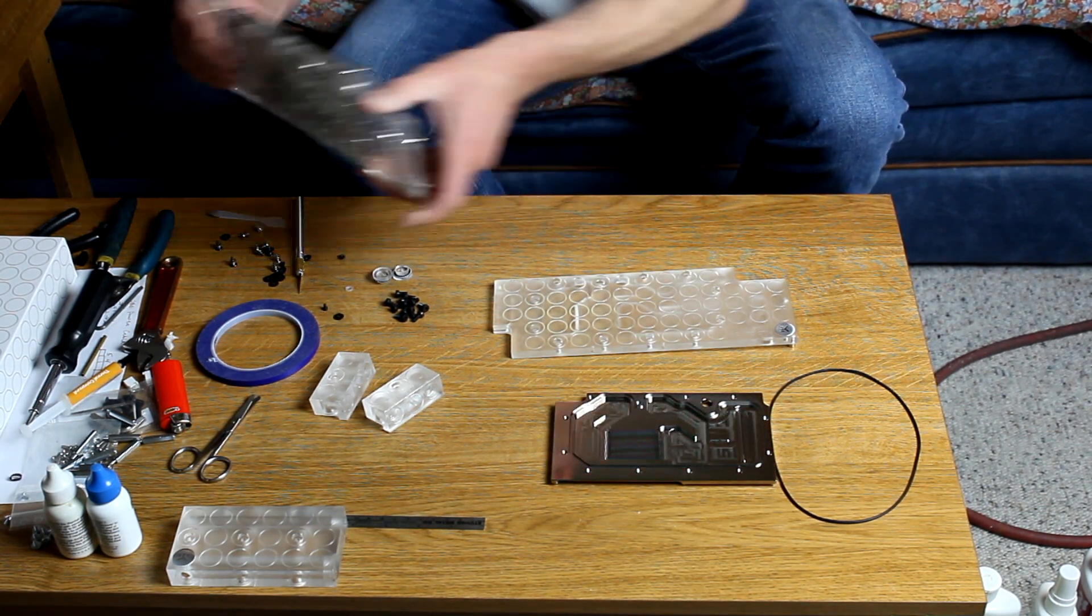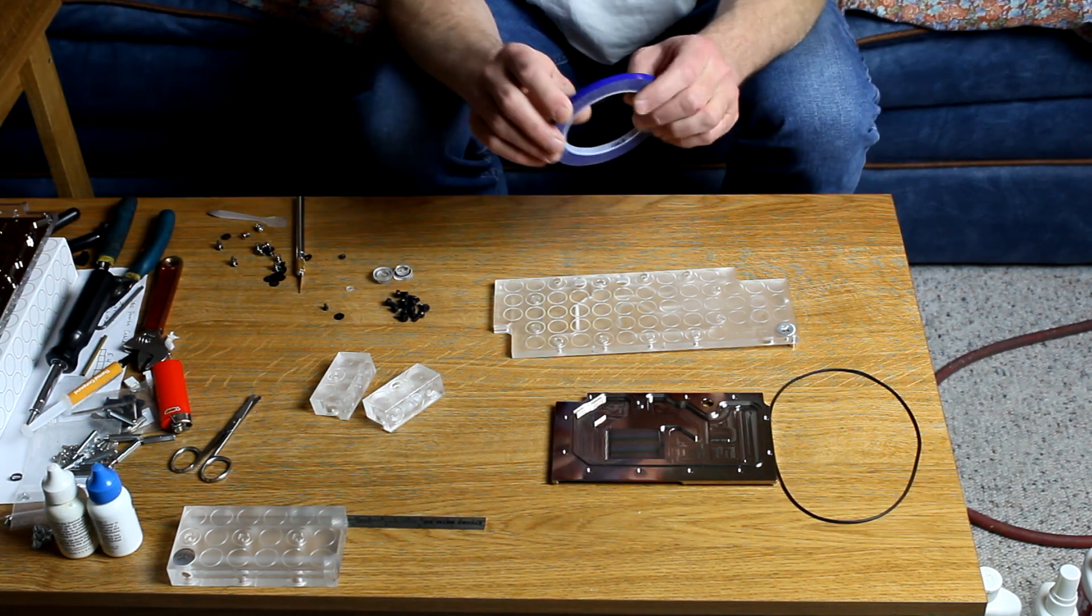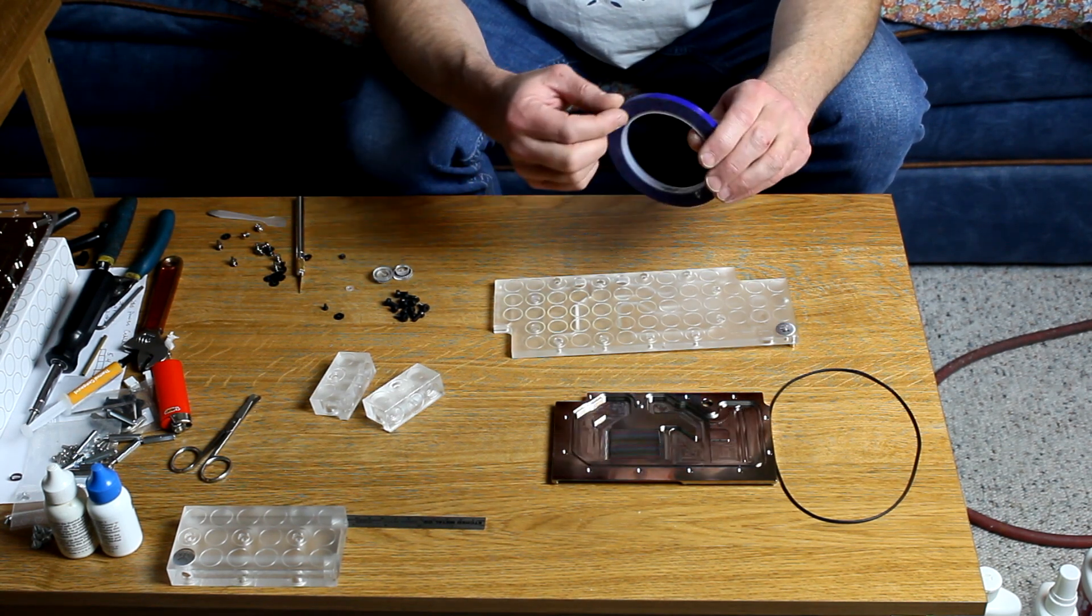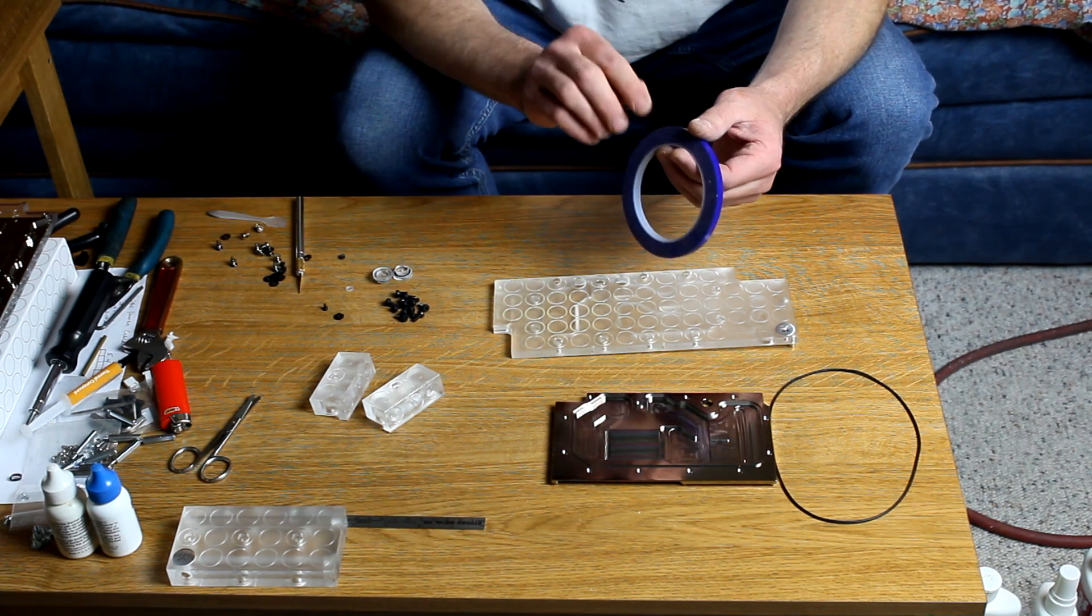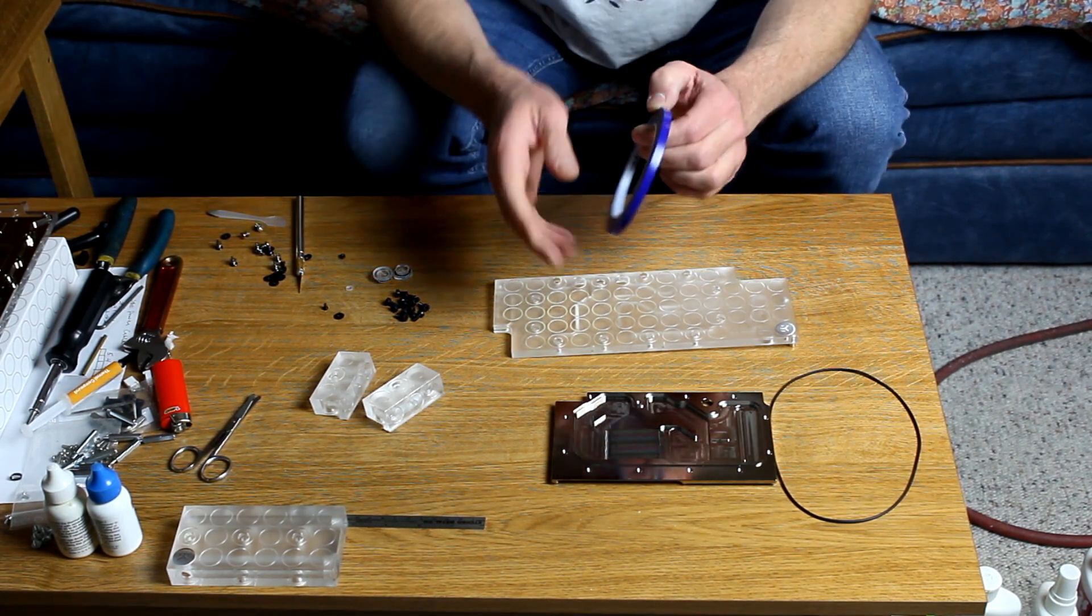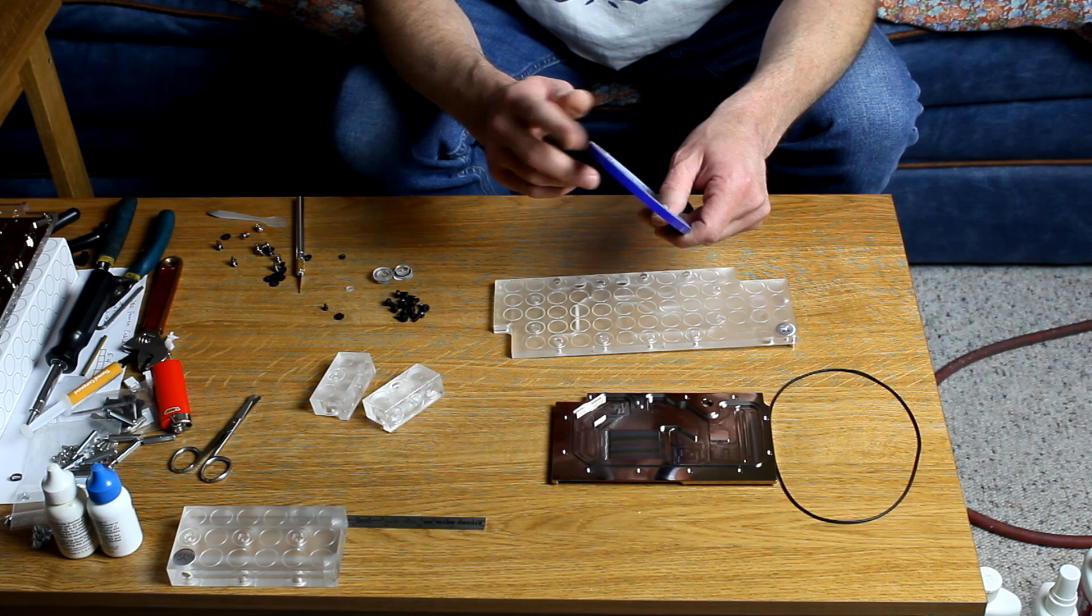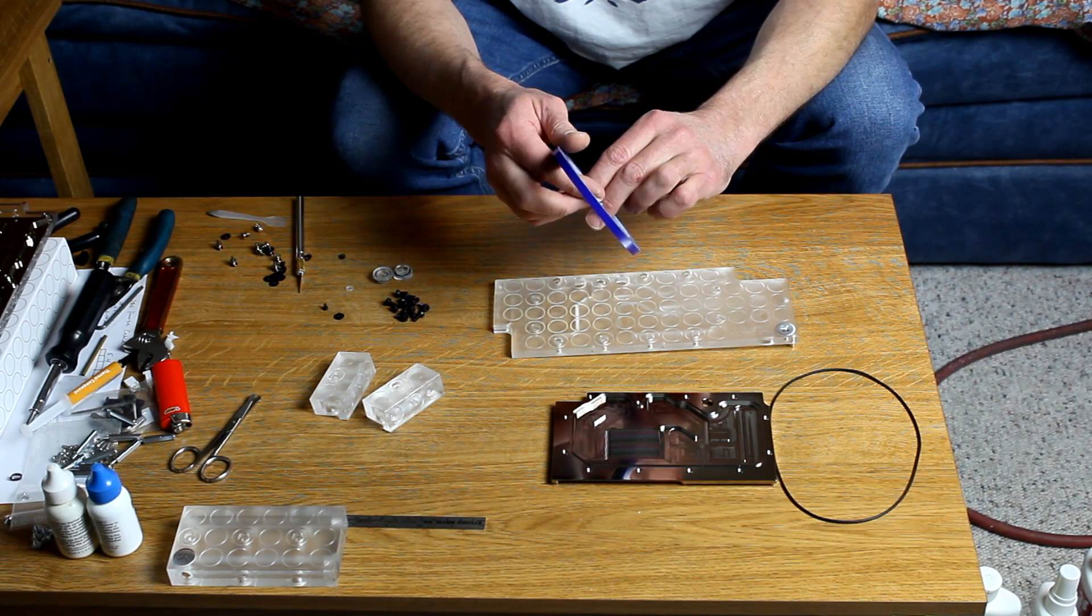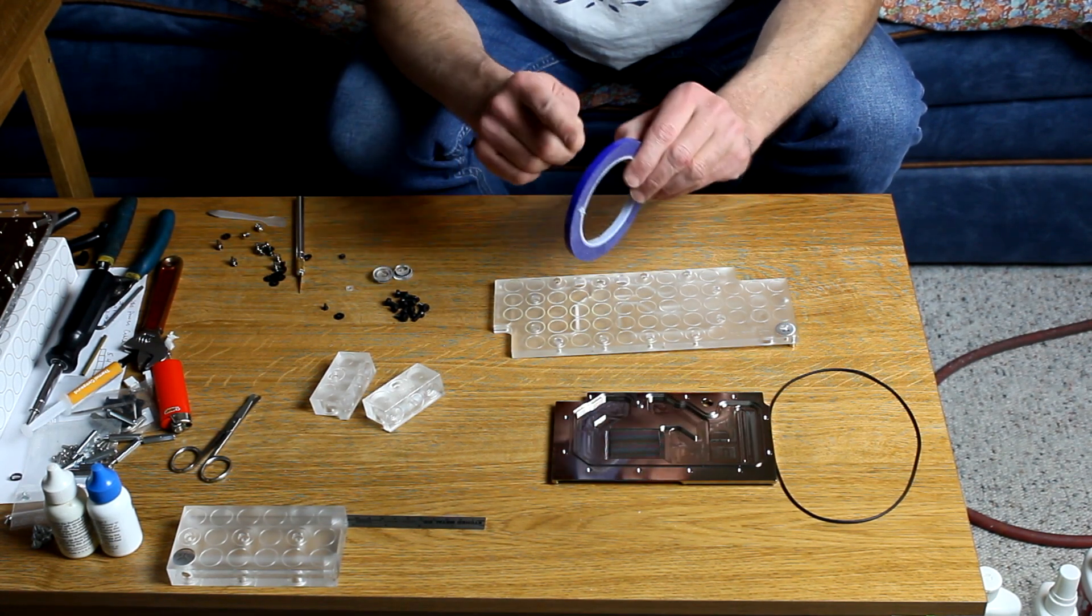So the secret is 3M vinyl tape. Now 3M vinyl tape is a heck of a lot stronger than just regular scotch tape or whatever. The adhesiveness of this tape is not as strong, especially when it's very thin. This is just a fine line tape that painting guys use to paint out flames or stencil material, but this works awesome.